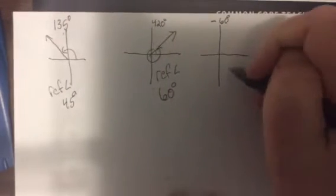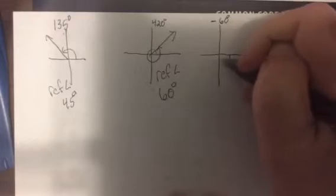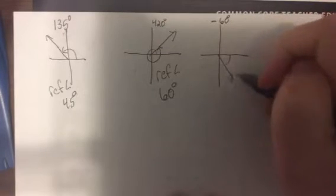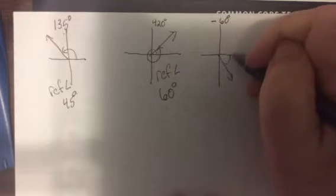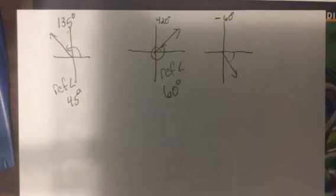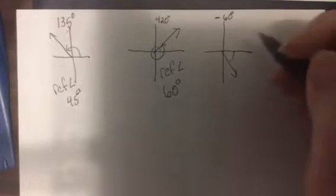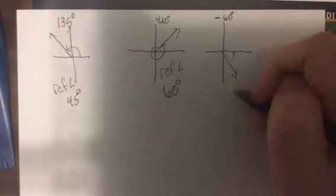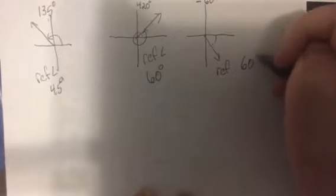And this one, negative 60. So negative 60, how far is it between here and here? And remember the reference angle is defined between, is defined as between 0 and 90. So it has to be positive. So the reference angle would be 60 degrees.